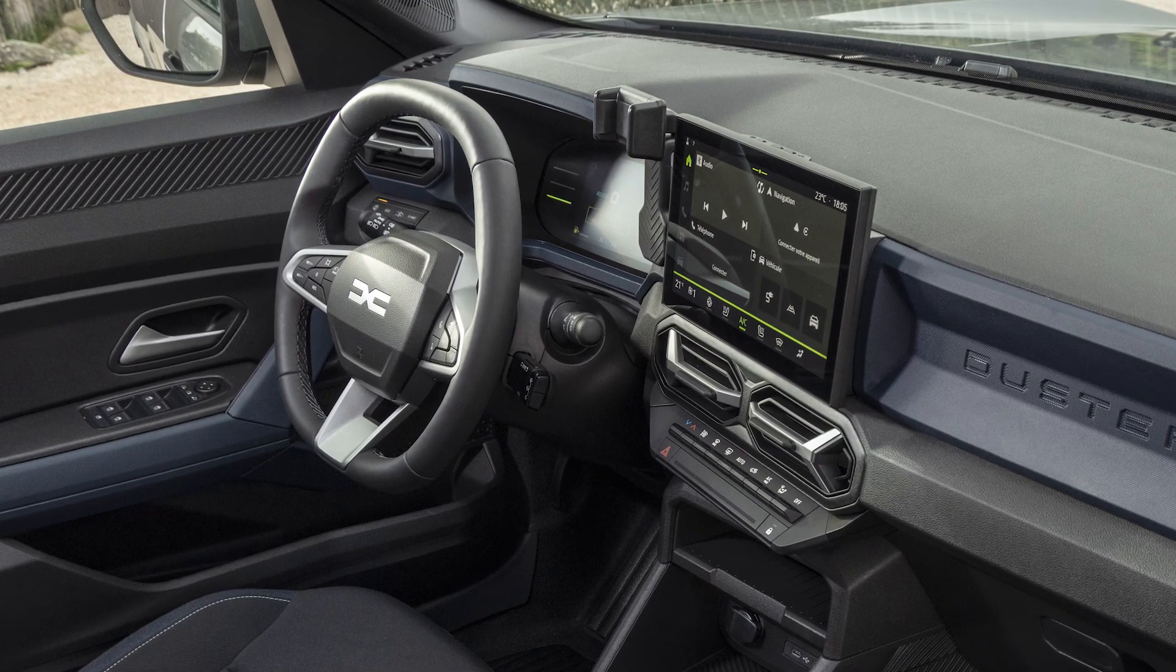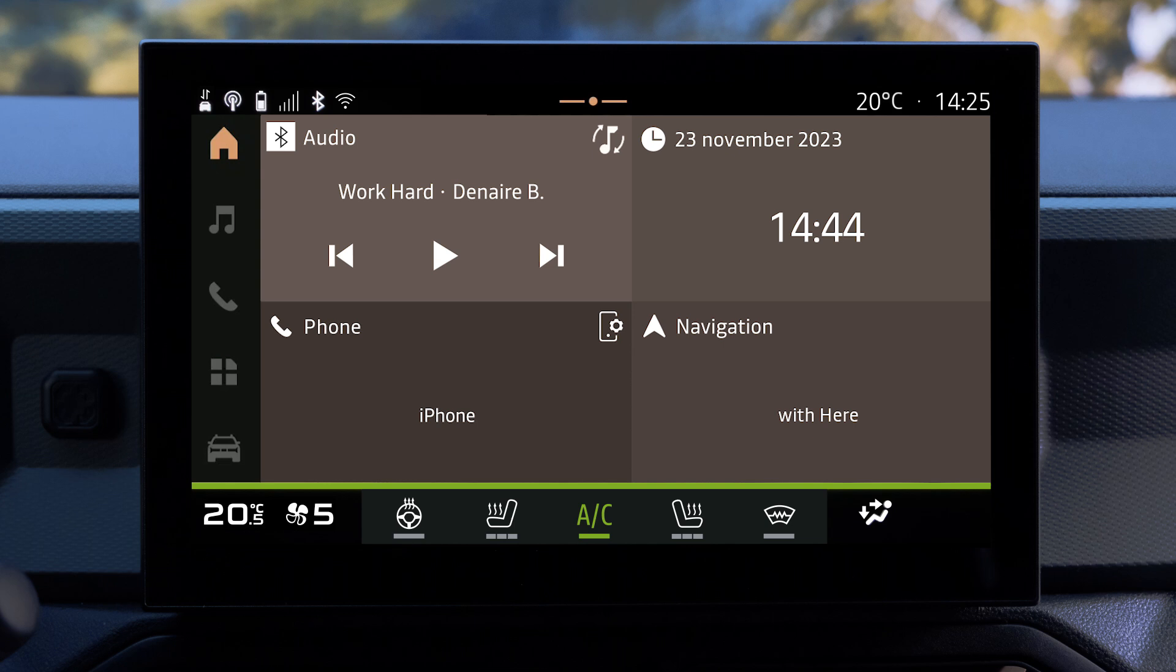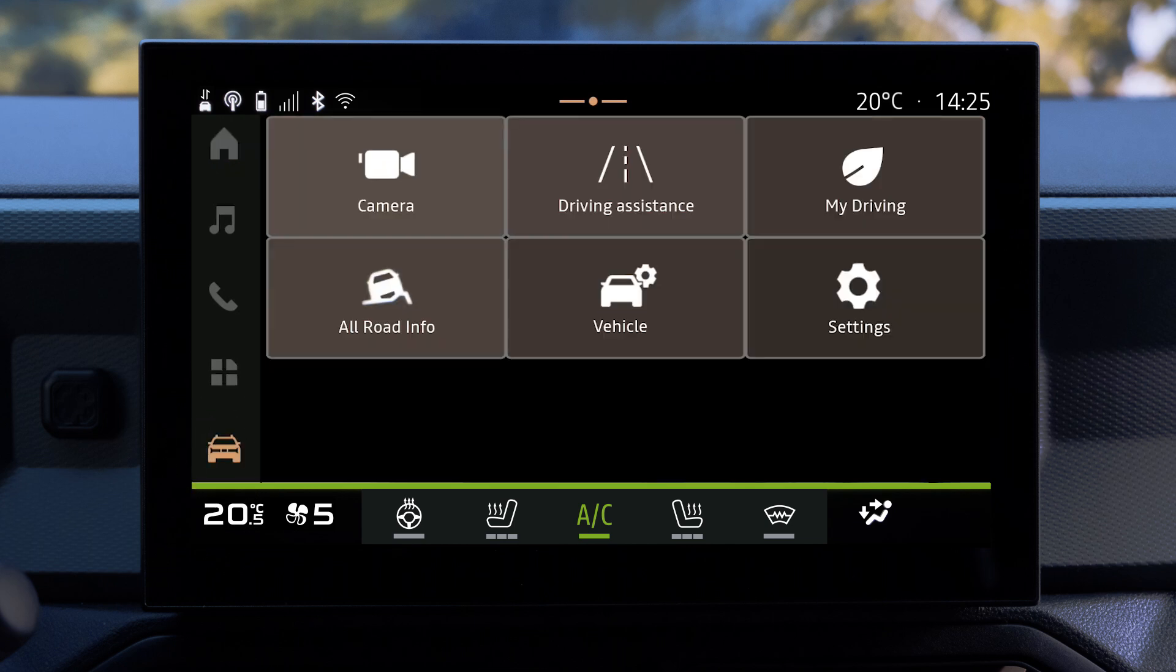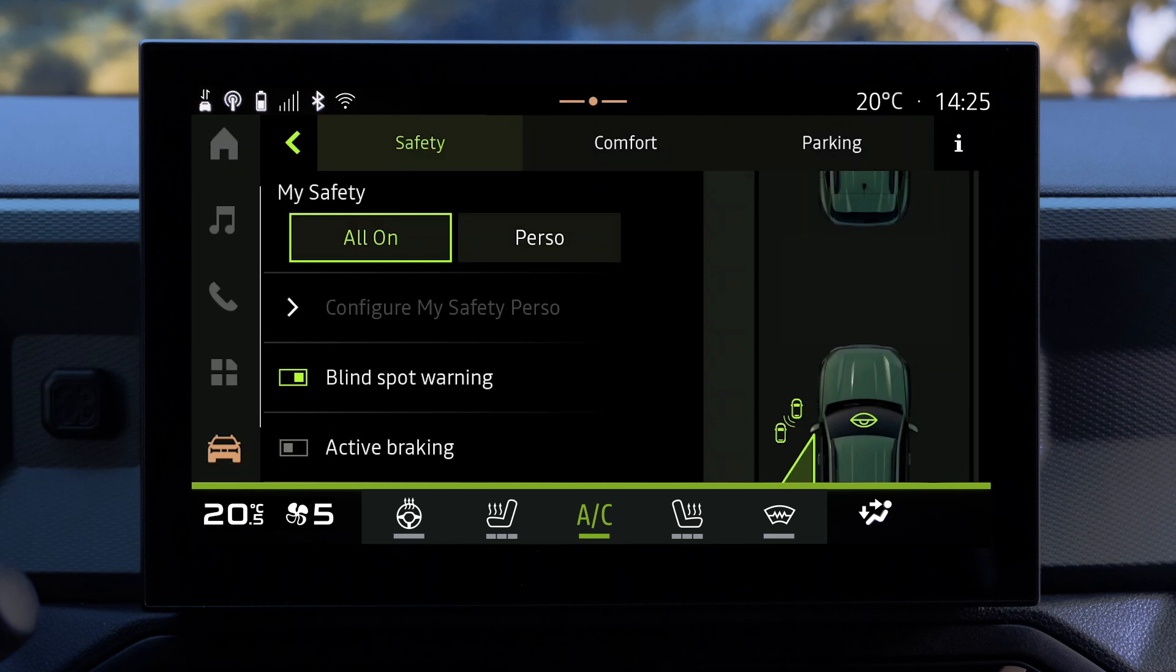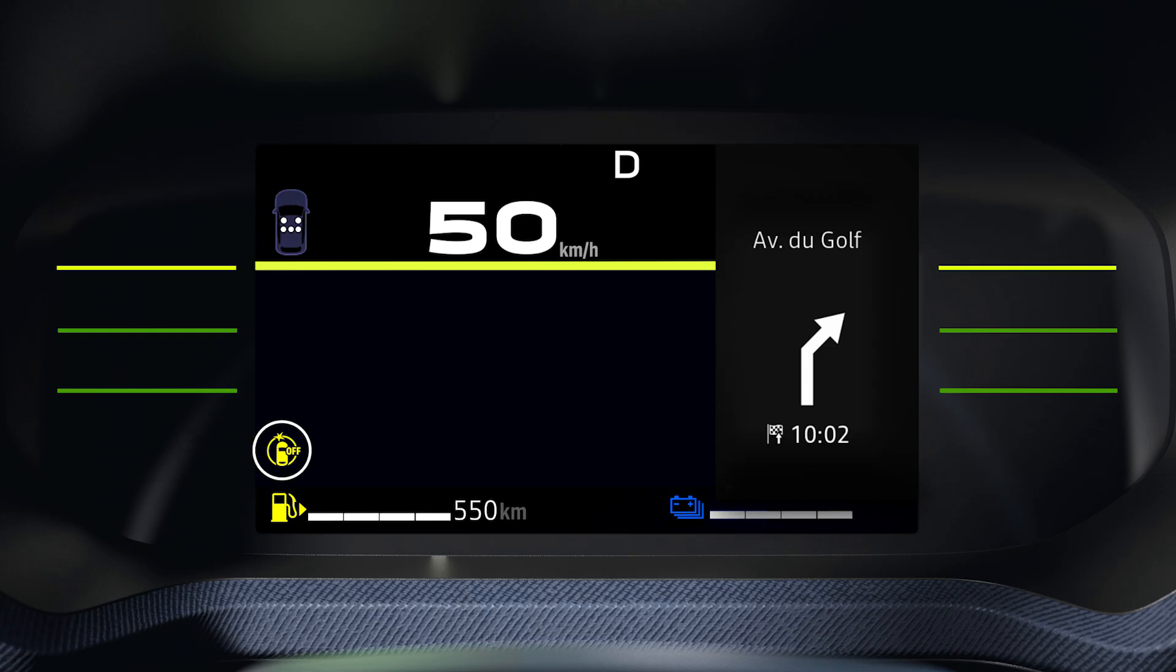If you want to turn the system off, go to the vehicle section in the center screen and select Driving Aids. Select On or Off. This yellow indicator light appears on the instrument panel when the system is switched off.